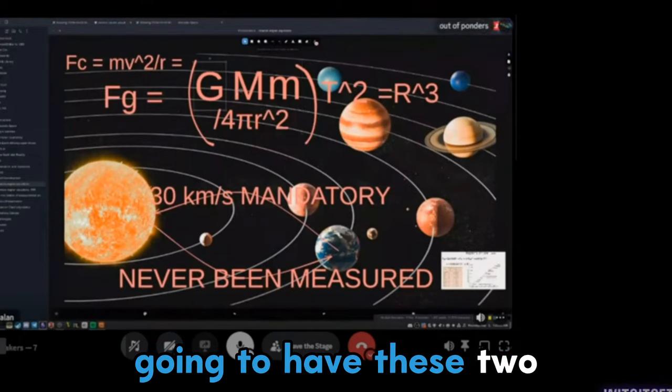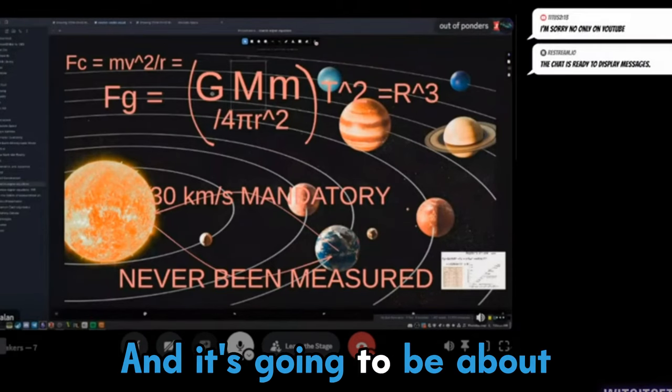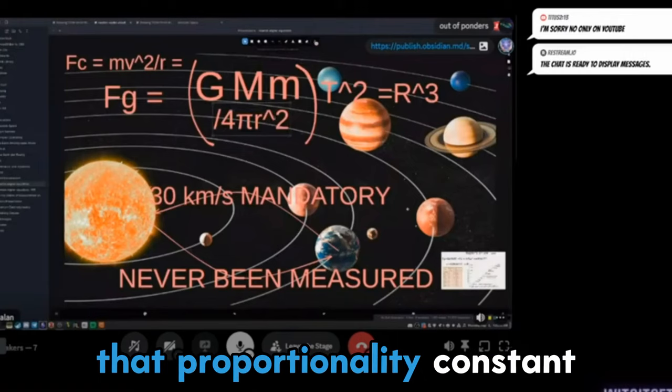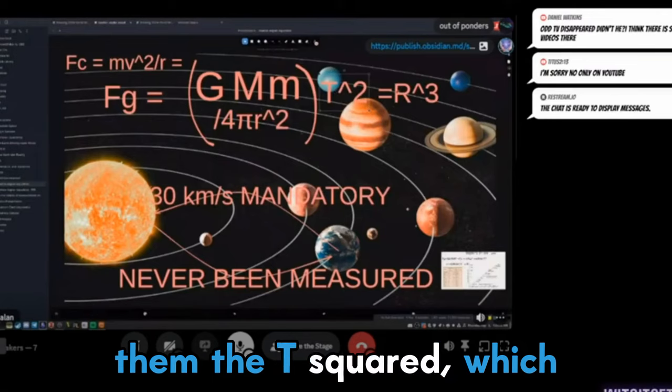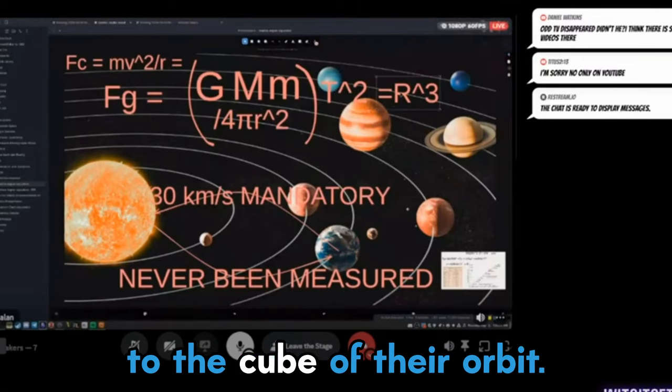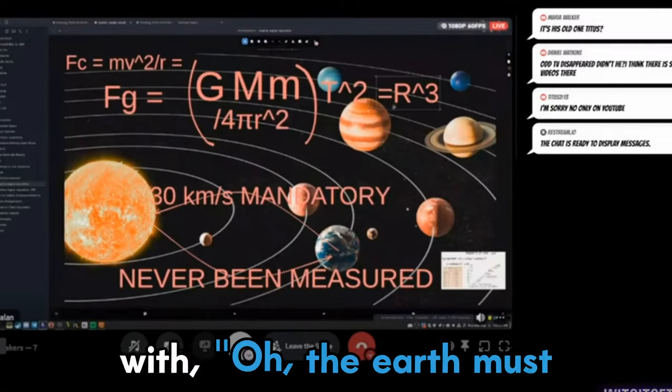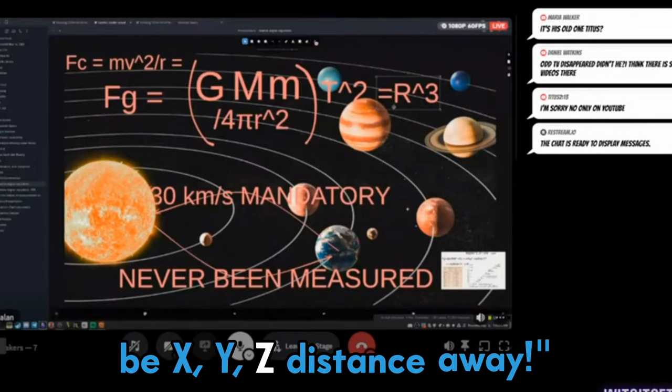And then we're just going to have these two constants, essentially. And it's going to be about these two constants over that proportionality constant for the radius of their orbit. And then that's going to give them the T squared, which is going to be proportional to the cube of their orbit. So this is how they came up with, oh, the Earth must be XYZ distance away, right?